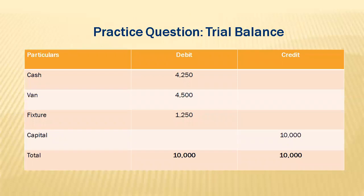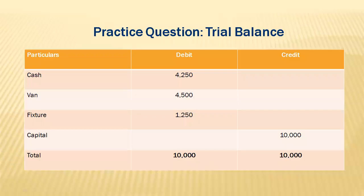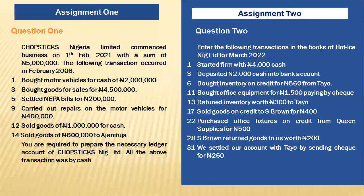So as I explained, cash, van, and fixtures all appear on the debit side of the trial balance, while capital appears on the credit side. At the end, total debits will equal total credits. Accounting is very easy — just follow the steps.